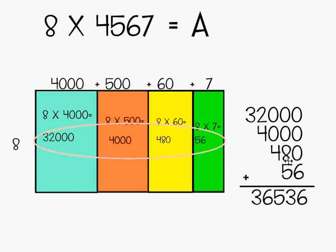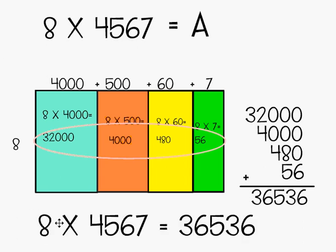When I add them together, I find that my product of 8 times 4567 is equal to 36,536. So you can see that I took this large multiplication problem and I broke it down into smaller parts by place value, making it much easier and much more manageable. So the answer of 8 times 4567 is 36,536.